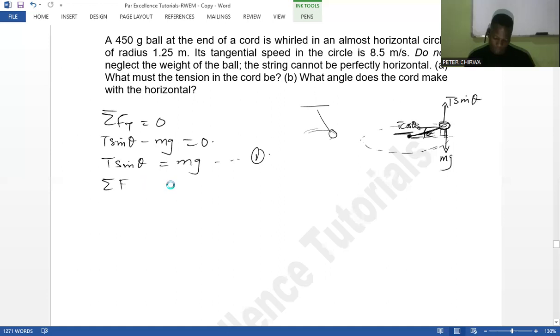And then we go to the horizontal where we have the centripetal acceleration. So we're going to have T cos θ being equal to mv² over r. So this one is my equation 2.